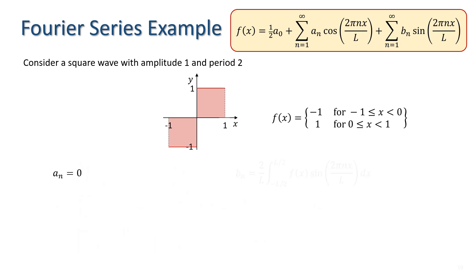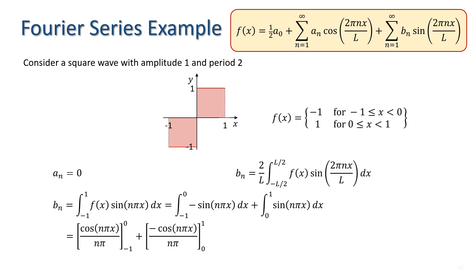Turning to b_n, we have the integral between minus 1 and 0 of minus sin n pi x plus the integral between 0 and 1 of sin n pi x. This gives cos n pi x over n pi evaluated at 0 and minus 1 and minus cos n pi x over n pi evaluated at 1 and 0.